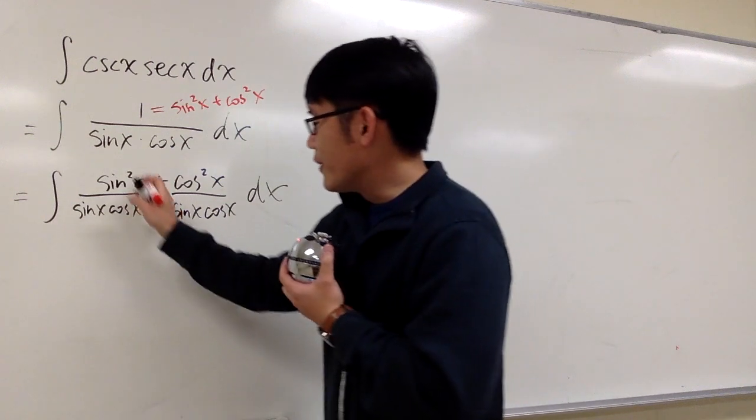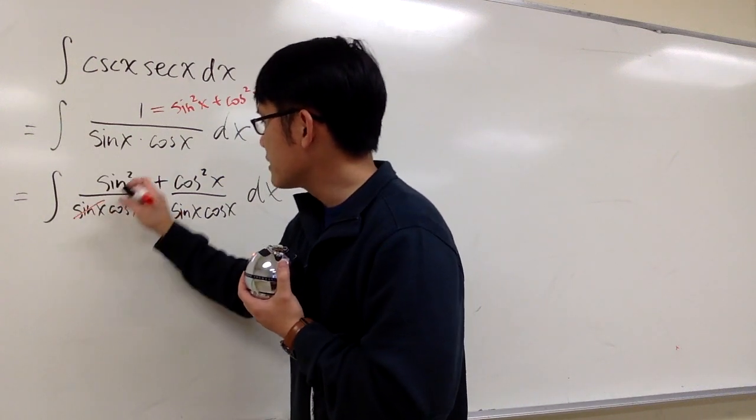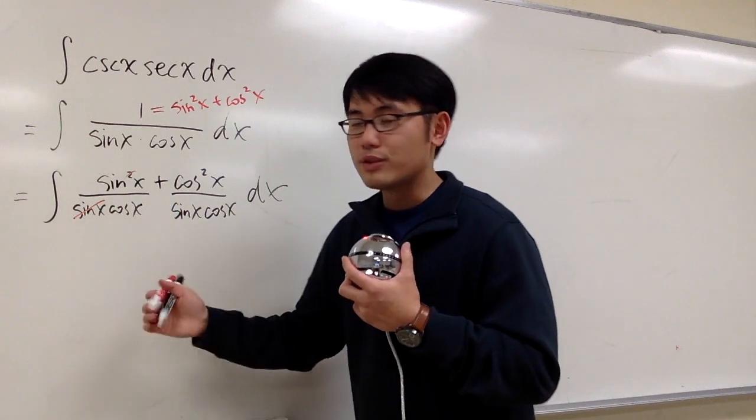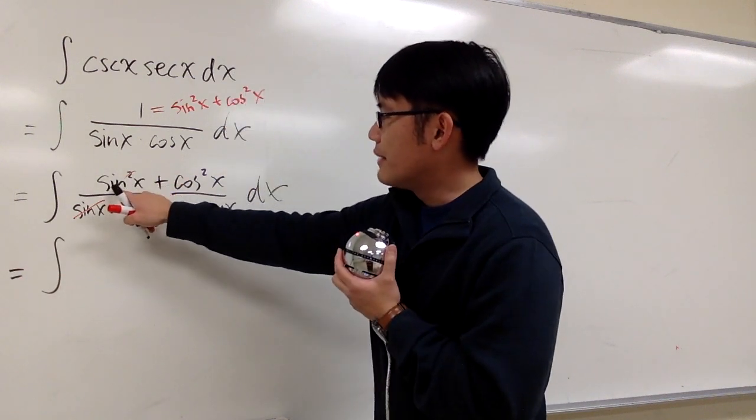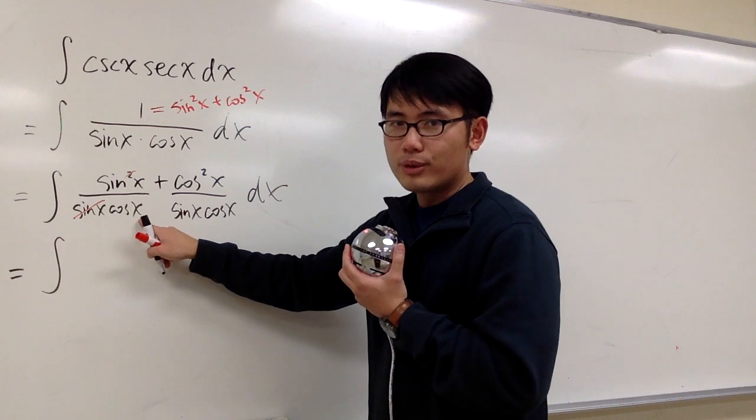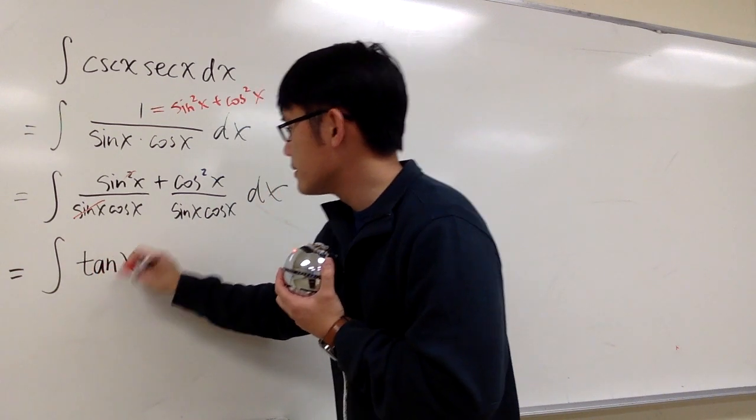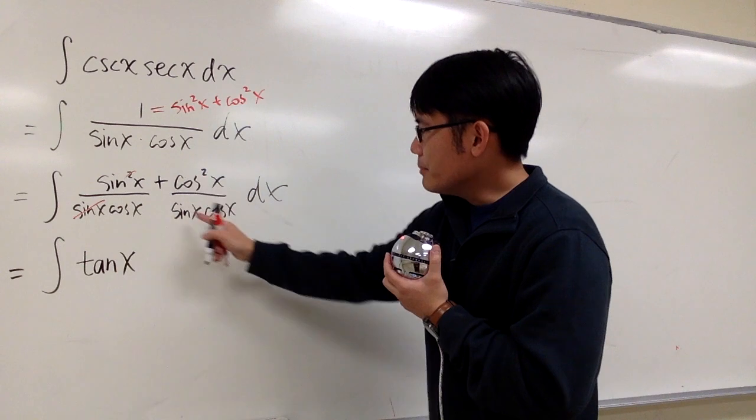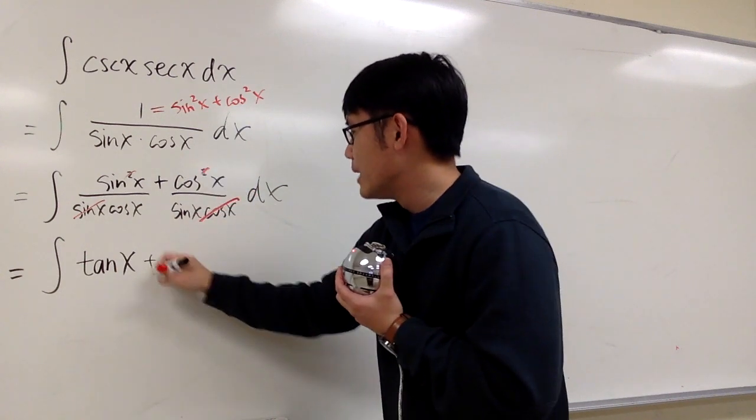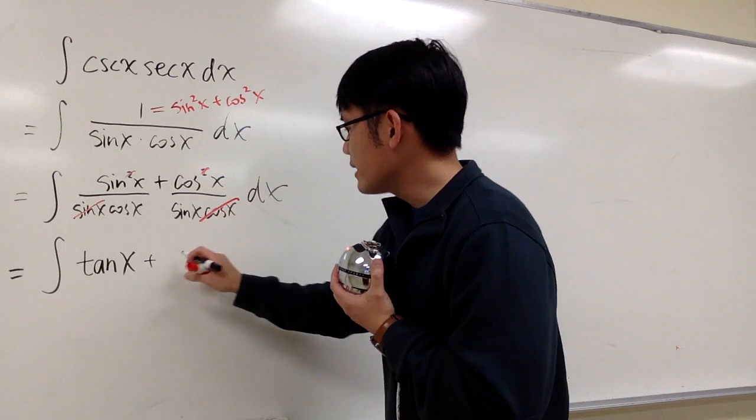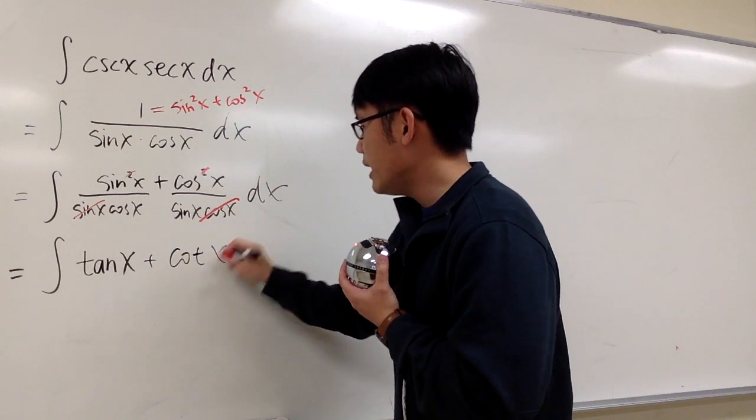And what can we do? For the first part right here, the sine x cancels out one of them. So I'm just talking about the integral. What's this? I have sine x on the top over cosine x. This right here is tangent x. And then on the second part, this cosine cancels one of them on the top. So I have what? Plus cosine x over sine x. That's cotangent x dx.